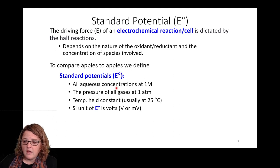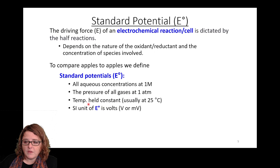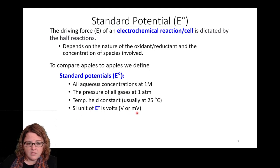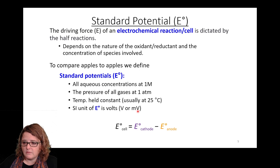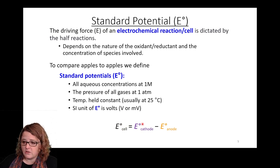Reminder: the degree symbol indicates standard conditions. Temperature is a fixed parameter, usually 25 degrees Celsius, and units are volts or millivolts depending on magnitude. The standard cell potential is going to be the standard potential at the cathode minus the standard potential at the anode. As long as both half cells are under standard conditions, you would measure the standard potential difference.